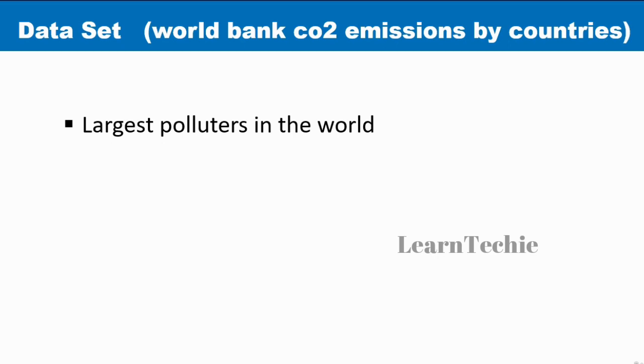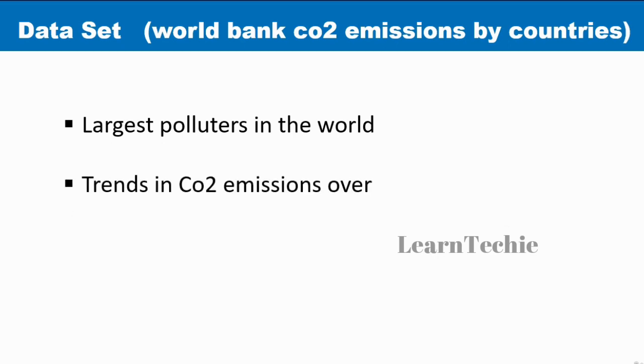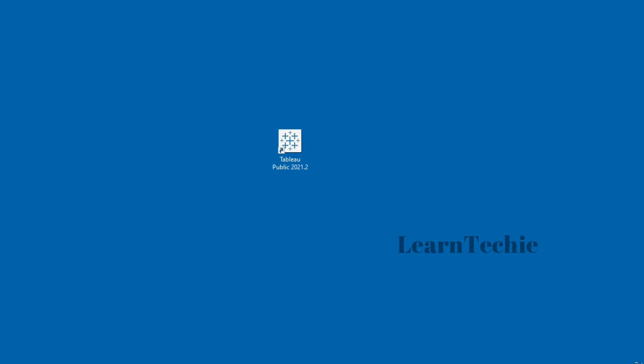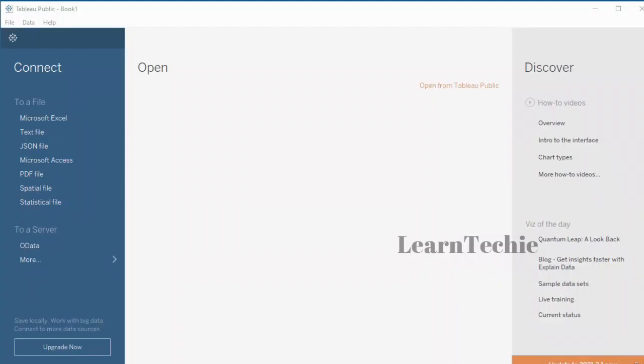With this data, we can answer questions like who the largest polluters in the world are, and we can check for trends in CO2 emissions over time. I'm going to open up my copy of Tableau Desktop Public. If you have other versions of Tableau, like Tableau Desktop or Tableau Online, you can also follow along with this video.